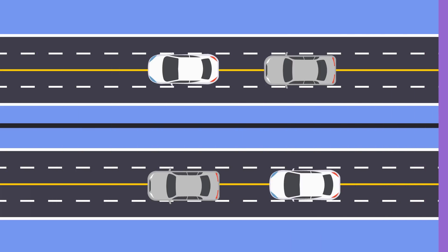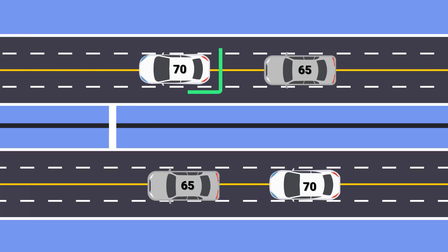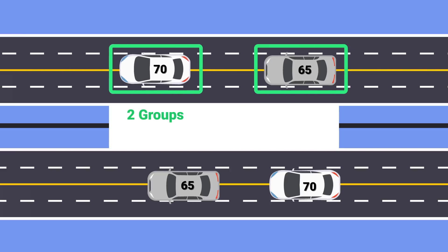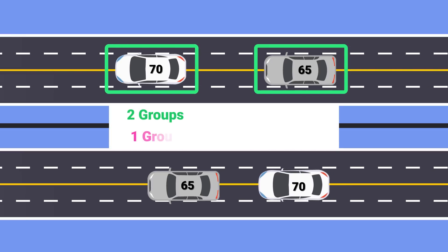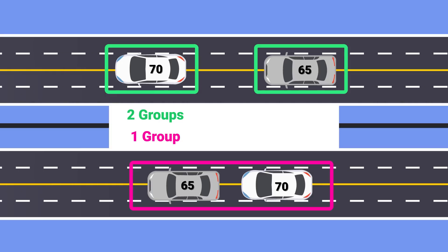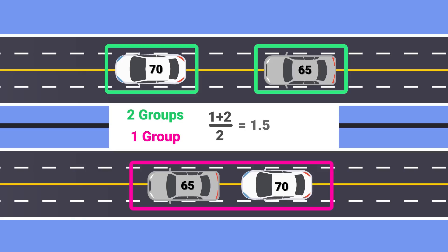First, imagine there are only two cars, one faster than the other. Here we've got two scenarios: either the faster person is in front and we have two groups, or the faster one is in the back, giving us one group. If we average these, we find the expected number of groups, or bunches, when there are only two cars is 1.5, or 1 plus a half.